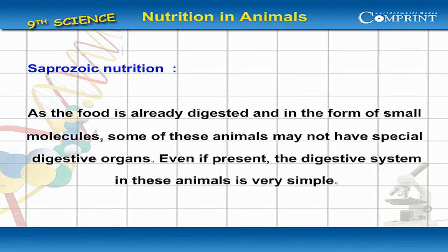As the food is already digested and in the form of small molecules, some of these animals may not have special digestive organs. Even if present, the digestive system in these animals is very simple.